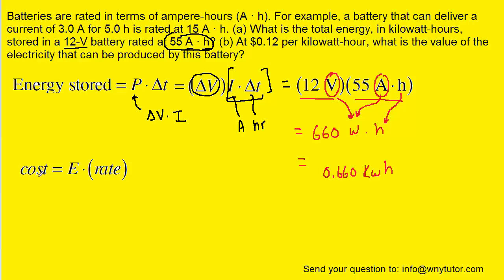For part B, we just have to note that the cost to run this battery is equal to the amount of energy it produces multiplied by the rate of cost. Now the rate of cost was given to us as 12 cents per kilowatt hour.